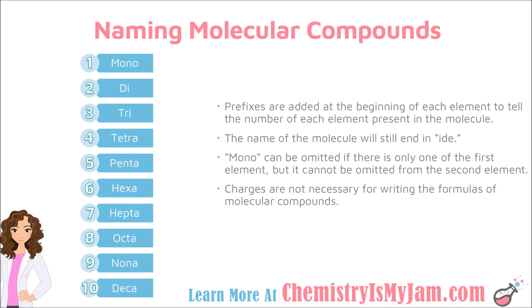The molecule name will need to end in -ide, just like in ionic compounds. The one rule to keep in mind is that mono can be omitted from the first element in the compound, but cannot be omitted from the second element. You will find that writing formulas for molecular compounds is simpler than ionic compounds because the charges do not matter — you simply go by the prefixes to determine the number of each element present.